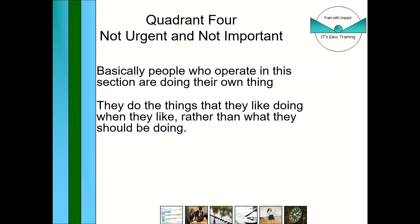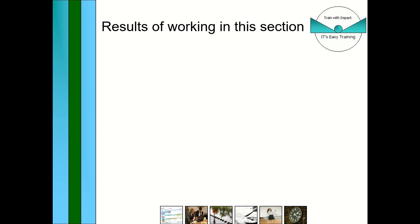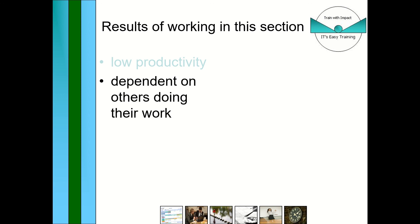Quadrant four people are the worst — constantly doing their own thing, looking busy, and may have created themselves a non-job. Goals and targets would tie them down as well. So to summarize the quadrants: quadrant one is the stress quadrant, quadrant two is planning and training, quadrant three is doing other people's work and complaining, and quadrant four is low productivity — just wandering around doing bits and bobs, always dependent on others.